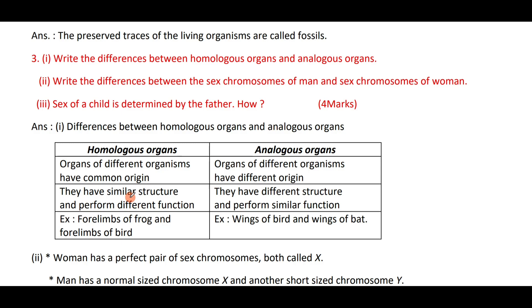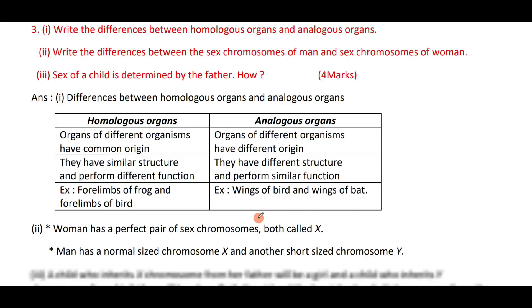Analogous organs have similar structure but perform different functions, while homologous organs have different structures but perform similar functions. For example, four limbs of a frog and four limbs of a bird are homologous. Wings of a bird and wings of a bat are analogous.